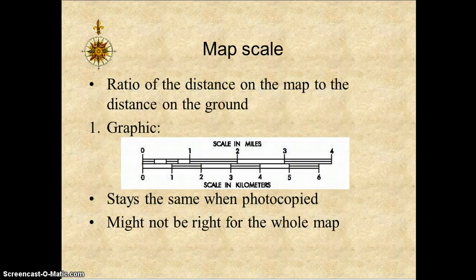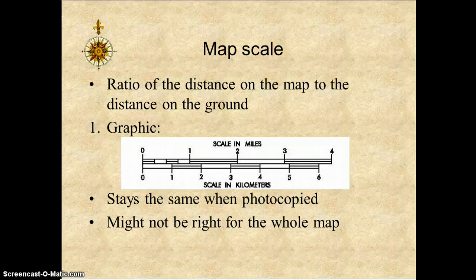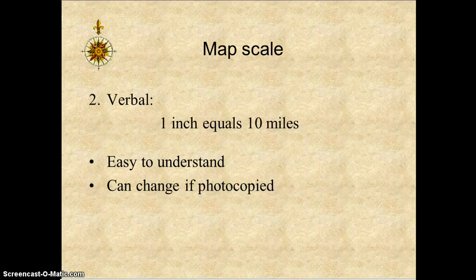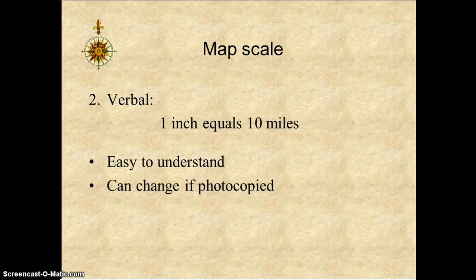Map scale is the ratio of distance on a map to the distance on the ground. A graphic scale shows miles and kilometers and stays the same when copied. A verbal scale, such as one inch equals 10 miles, is easy to understand. However, if the map is being photocopied it becomes a little more difficult, though when using Google Maps it stays pretty steady.